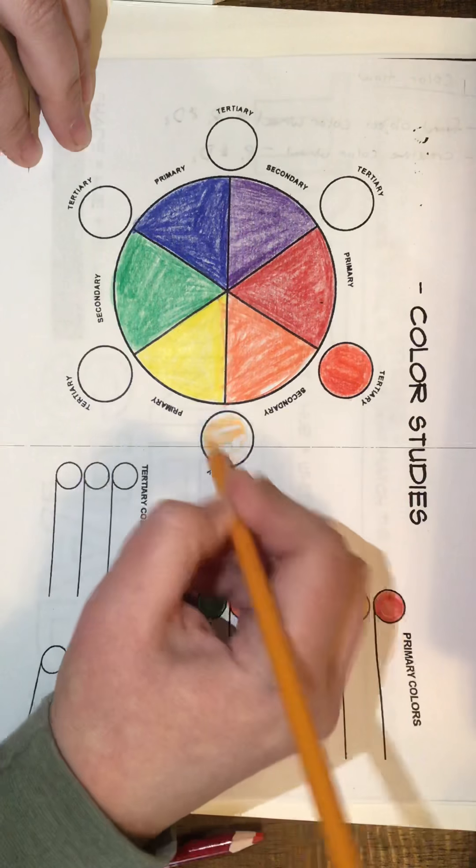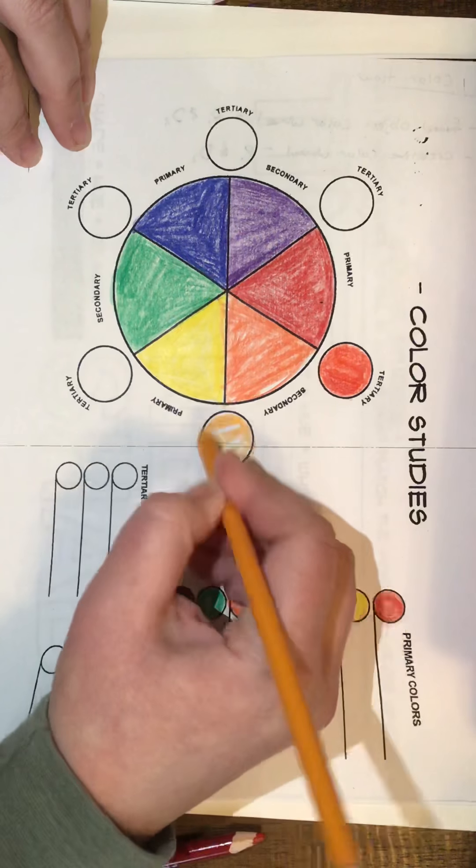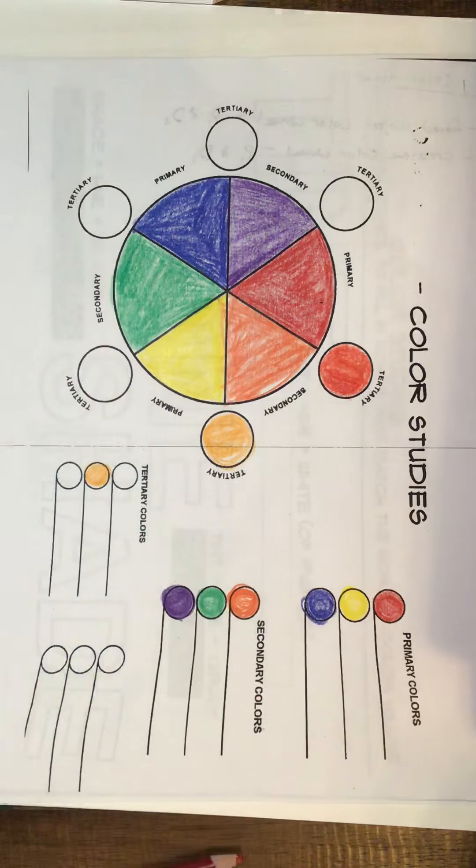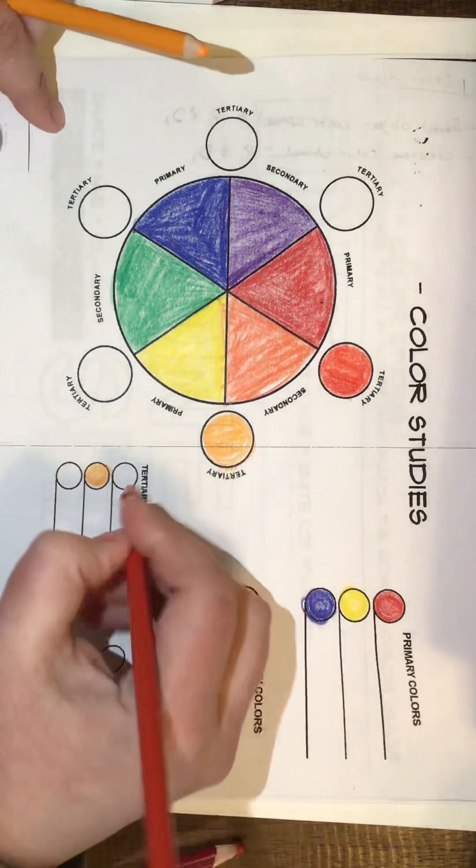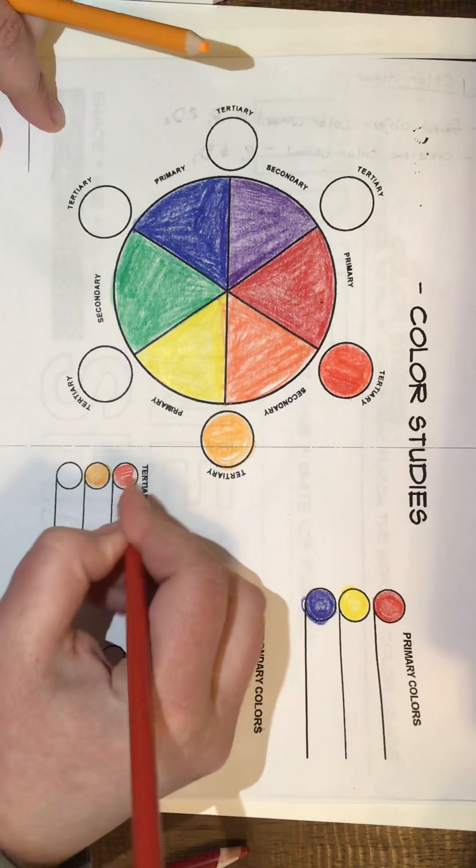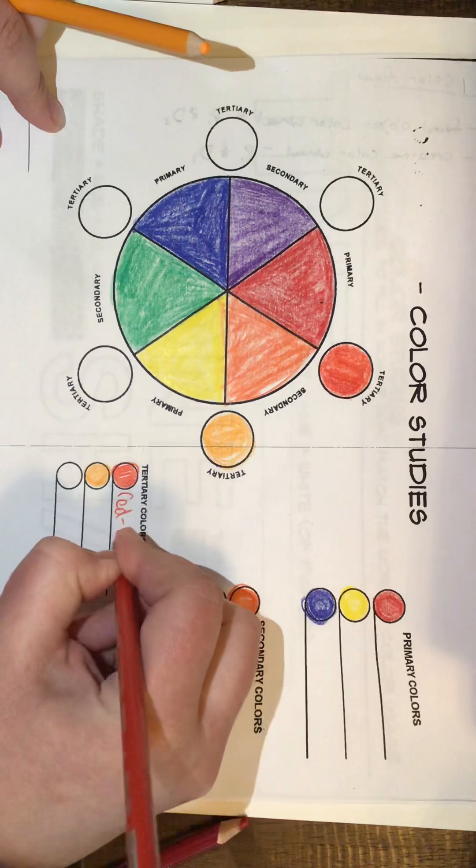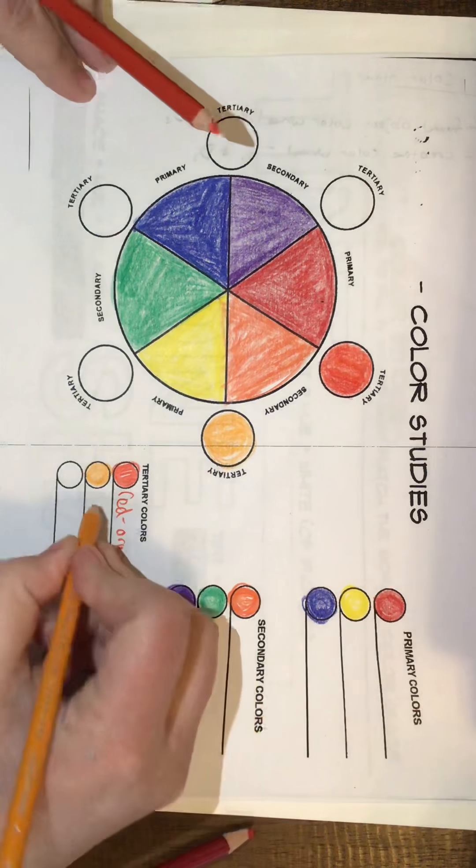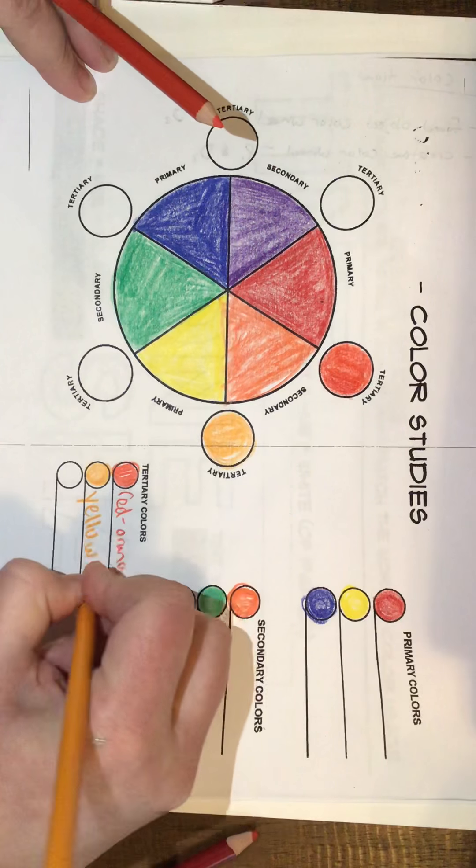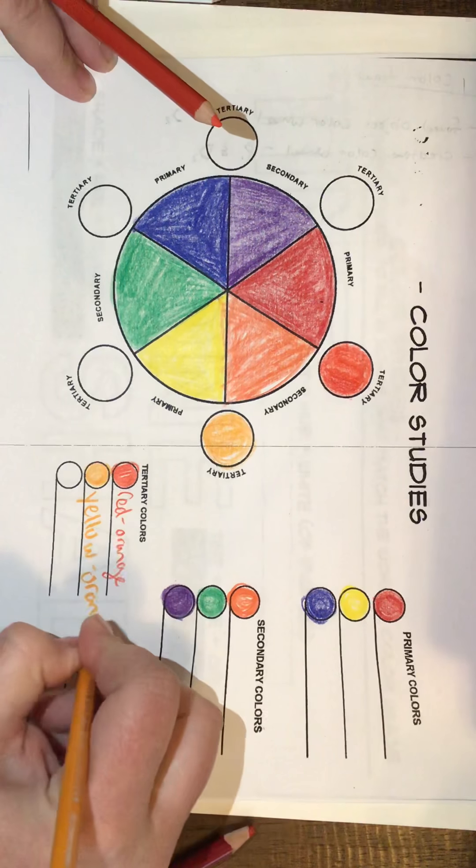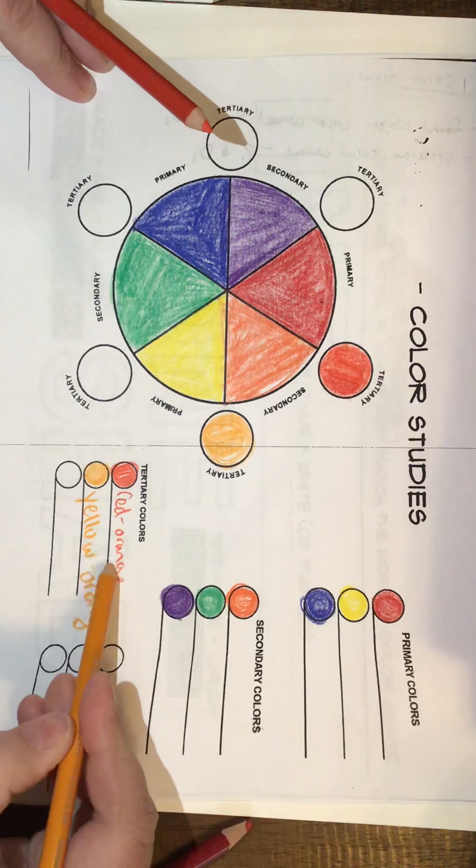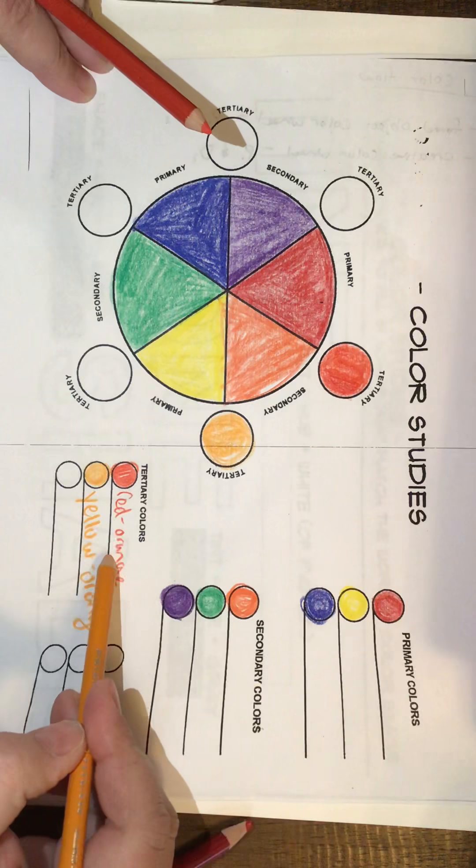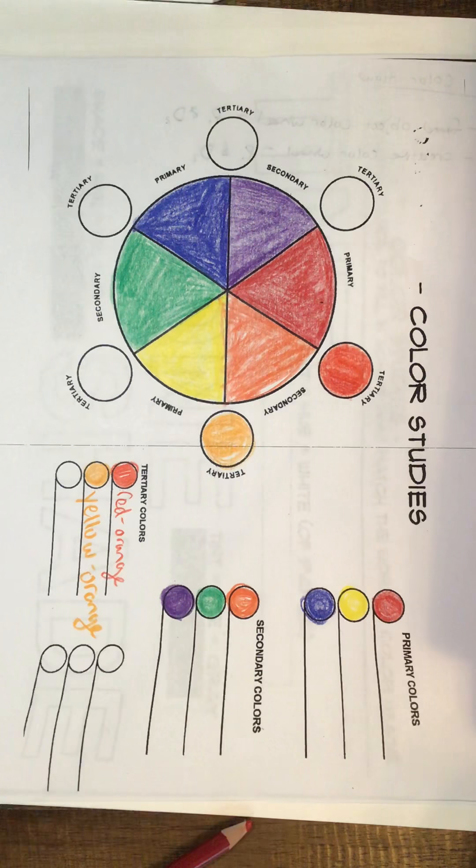So here I've got yellow-orange. I do want you to label them down below as well because the naming scheme becomes important also. So this one is red-orange and this one is yellow-orange. I know it looks a little bit more like macaroni and cheese, it's yellow-orange. When we name tertiary colors, you always name the primary first and then the secondary.